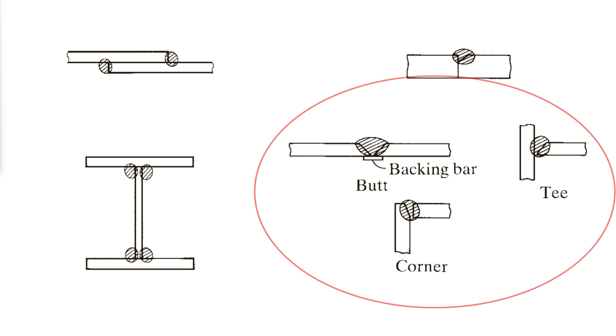The welds shown are complete penetration welds and can be made from one side sometimes with the aid of a backing bar. Partial penetration groove welds can be made from one or both sides with or without edge preparation.